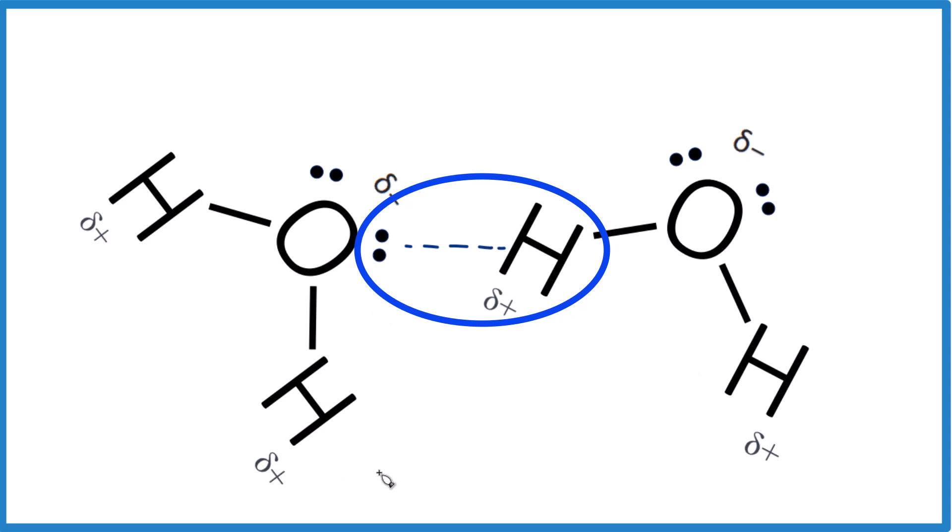That's how you would draw your hydrogen bonding for two water molecules. Of course, you could form hydrogen bonds from this lone pair to another water molecule, from this hydrogen to another, and this hydrogen to another one again. Four total possible hydrogen bonds for each water molecule.